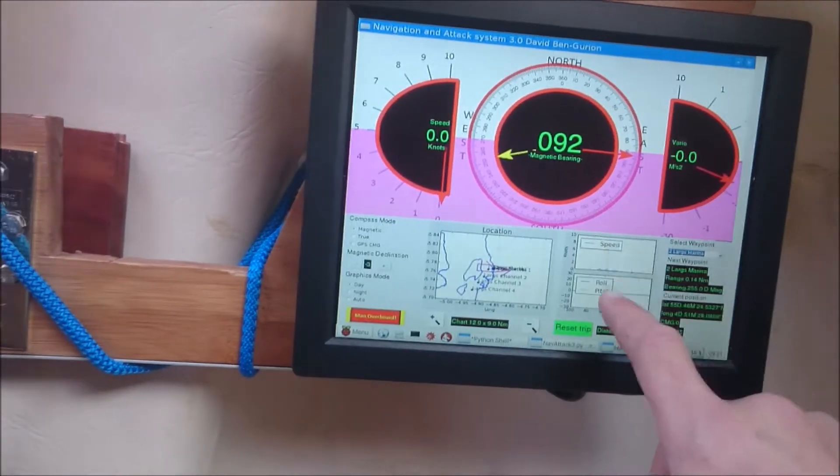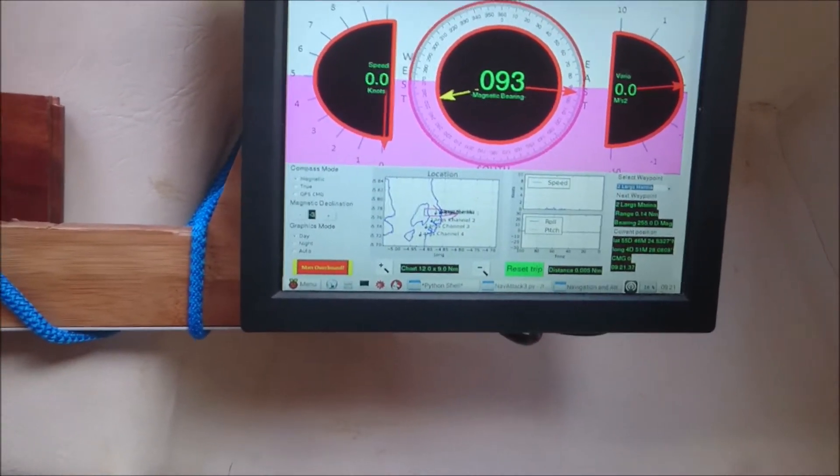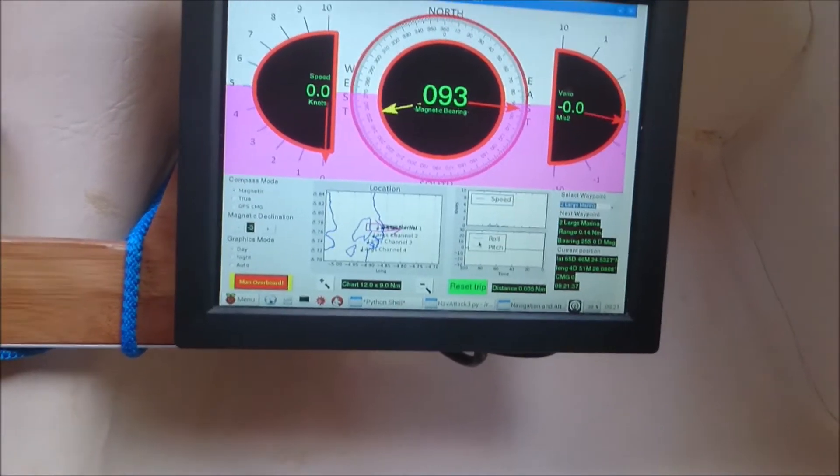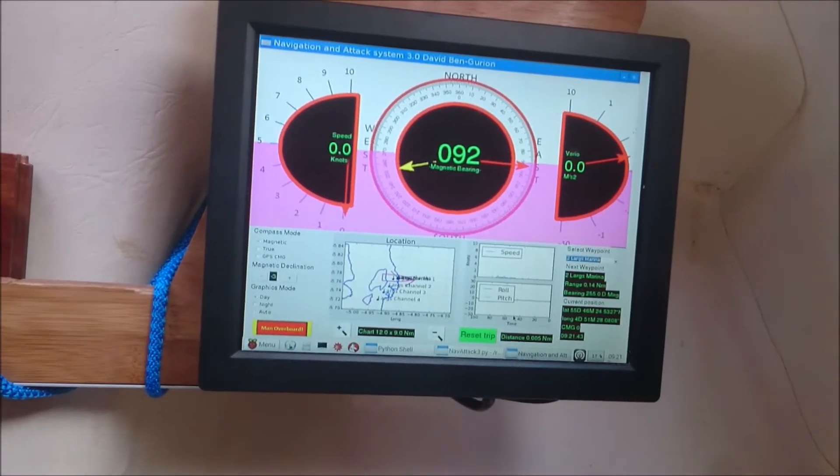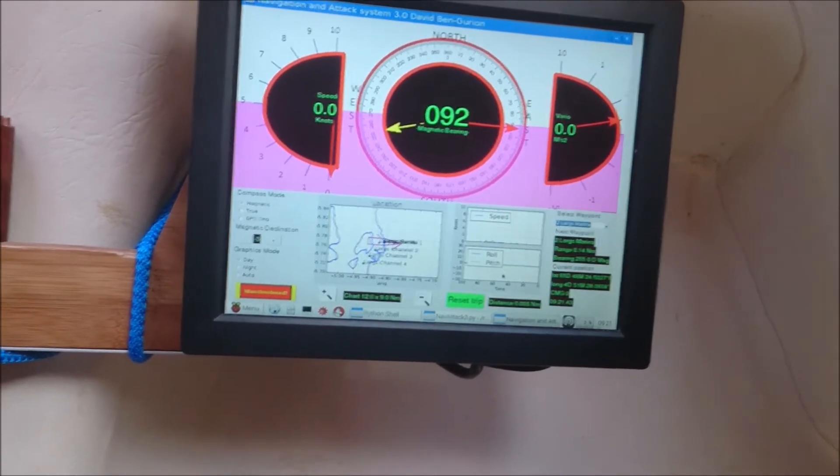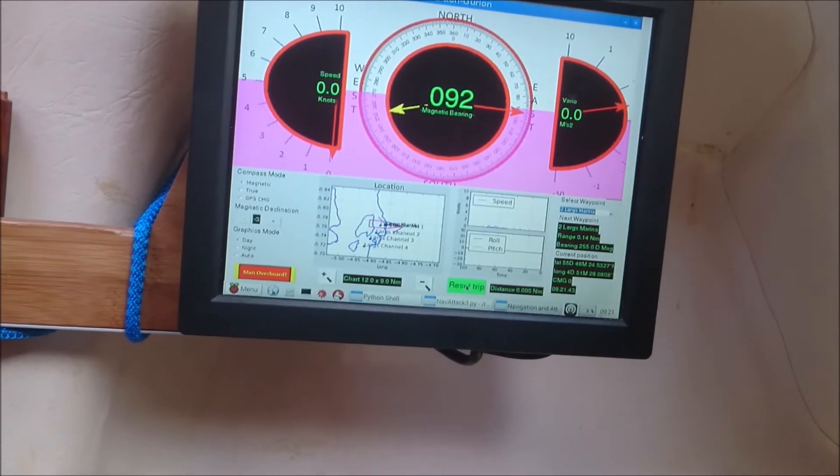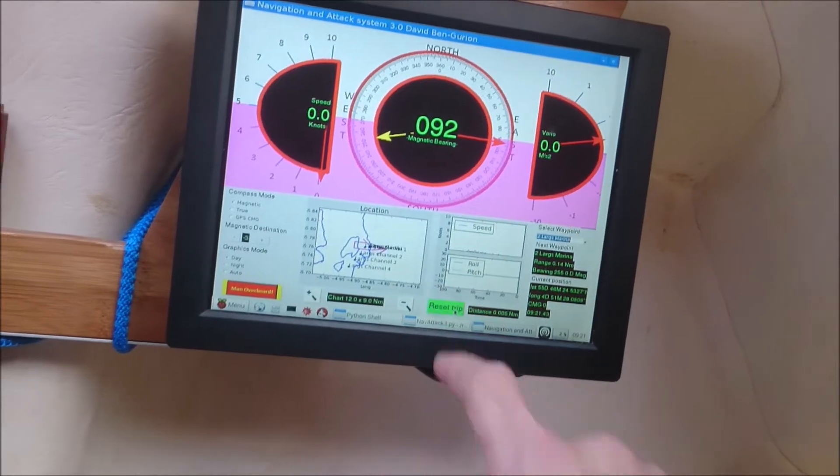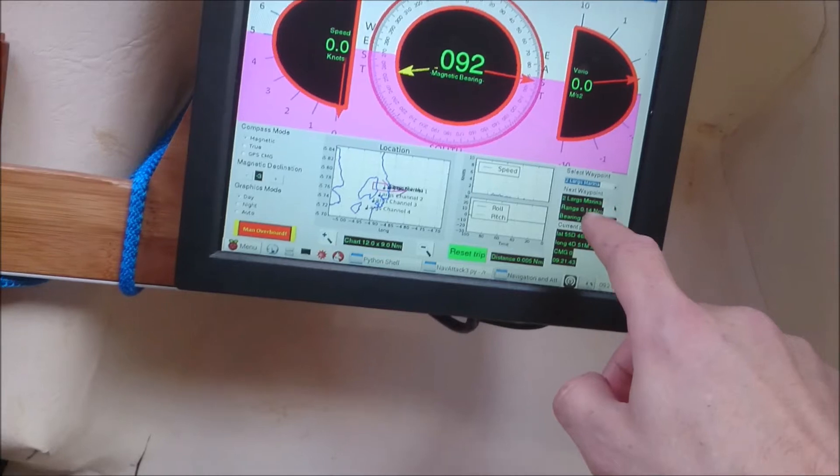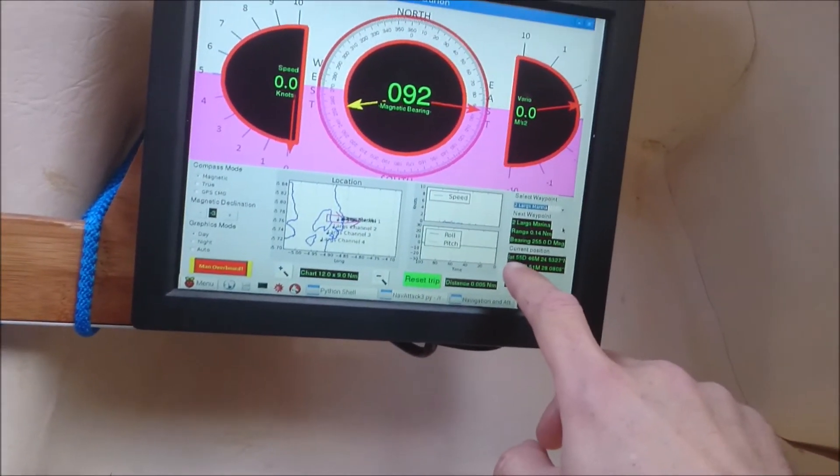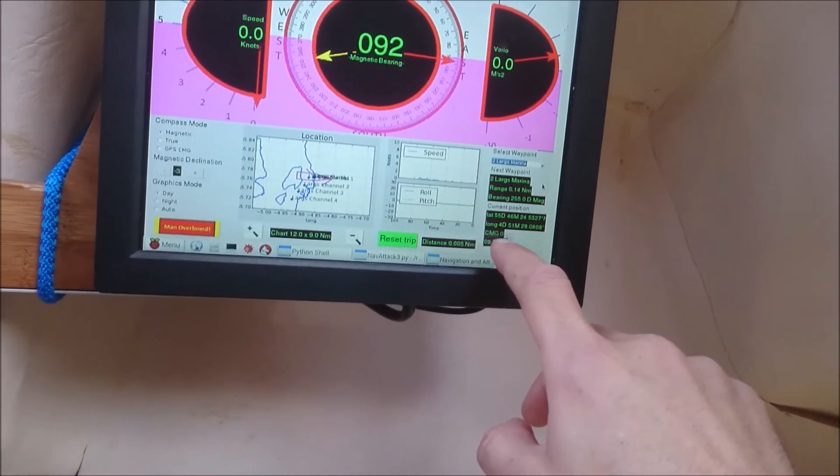And then here we've got two graphs which is speed and pitch and roll, which are actually quite useful. You can get your speed history and again you can get how much abuse the boat's getting. You can reset the tripometer here with this big green button, which I tend to do obviously. And then here we've just got your next waypoint, the range and bearing to the next waypoint, and your current lat and long position, and the time.